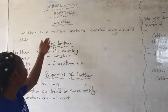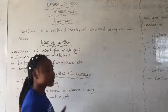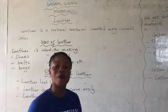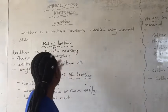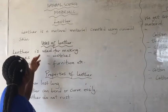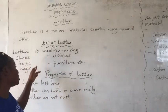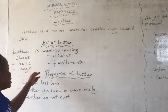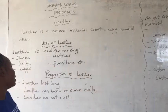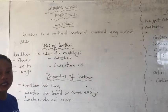Leather is a natural material created by using animal skin, so we get leather from animal skin. Uses of leather: leather is used for making shoes, belts, bags, watches, and furniture. So we use leather to make all these things.